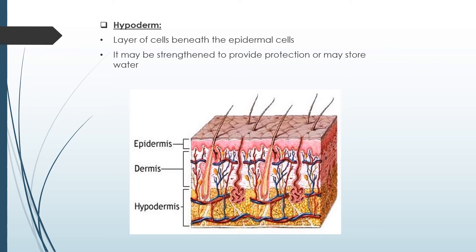The hypoderm is a layer of cells beneath the epidermal cells. It may be strengthened to provide protection or may store water. In the diagram, you can see the epidermis on top, then the dermis, and then the hypoderm beneath.